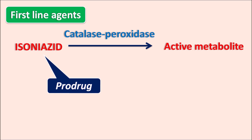This catalase-peroxidase enzyme is coded by the katG gene. The katG gene is an important gene present in the mycobacteria responsible for transcription of enzymes resulting in the bioactivation of isoniazid. Once isoniazid is activated, it can inhibit an important enzyme called InhA.